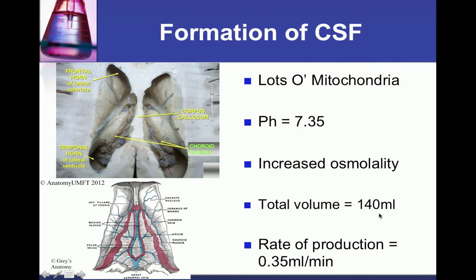The total volume is approximately 140 mL and is turned over about three times a day in a continuous process of formation, flow, and absorption. Formation happens at a rate of about 0.35 mL per minute, about 500 mL per day, and studies have shown that you produce more at night. CSF formation also decreases with age. It's important to note that CSF is secreted by the ependymal cells of the choroid plexus.